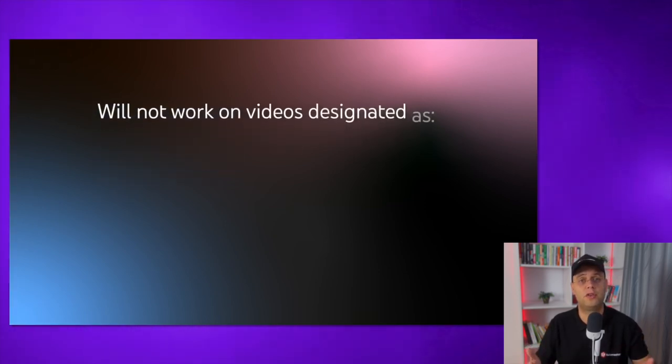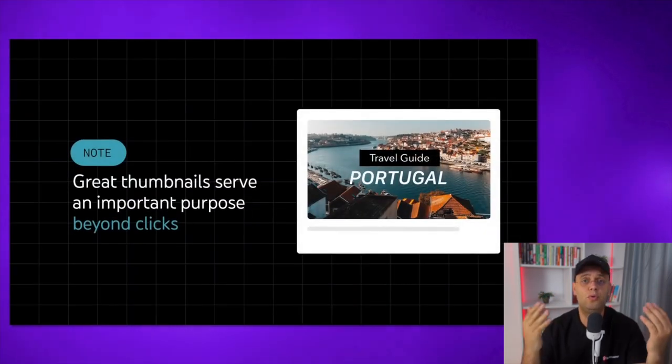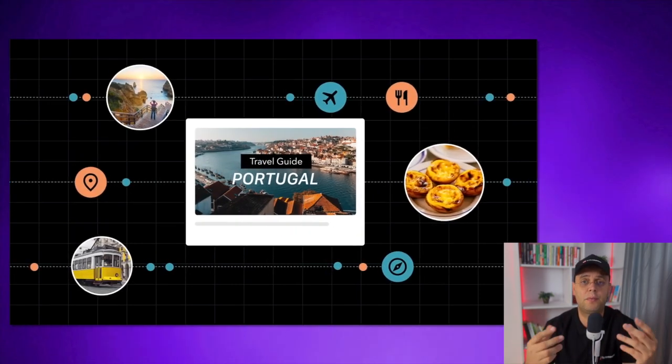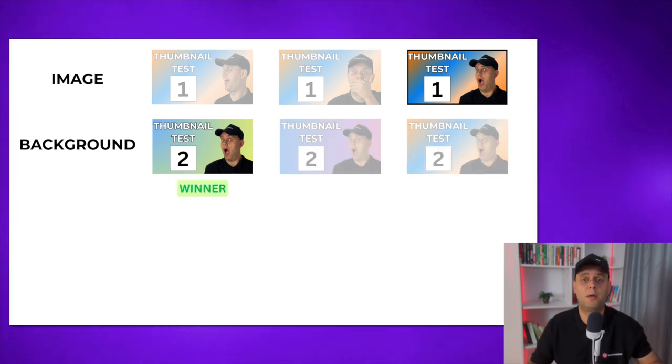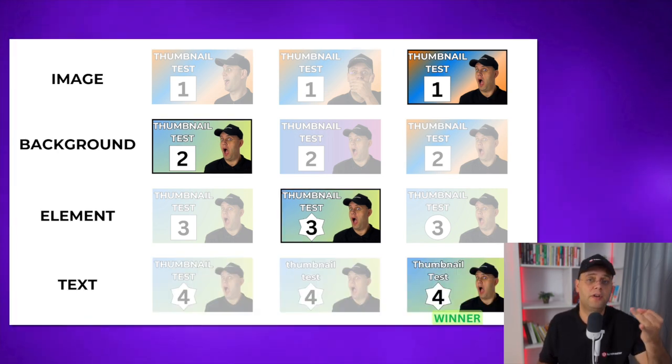A best practice for using the Test and Compare feature is that the thumbnail needs to adhere to the community guidelines. The tool also won't work on videos marked as made for kids, for mature audiences, or for lives. An important tip is that great thumbnails do more than just fetch clicks — they give viewers a sneak peek into your video, saving their precious time from clicking on irrelevant videos. I recommend you test completely different thumbnails in the beginning, and then when you find your winner, double down on that and run a test with small variations on that thumbnail — for example, different colors, different text, and different elements. If you want to deep dive on how to get the most out of this tool, use the link in the description below or in the card above where I'll show you my complete workflow on how I use this Test and Compare tool.